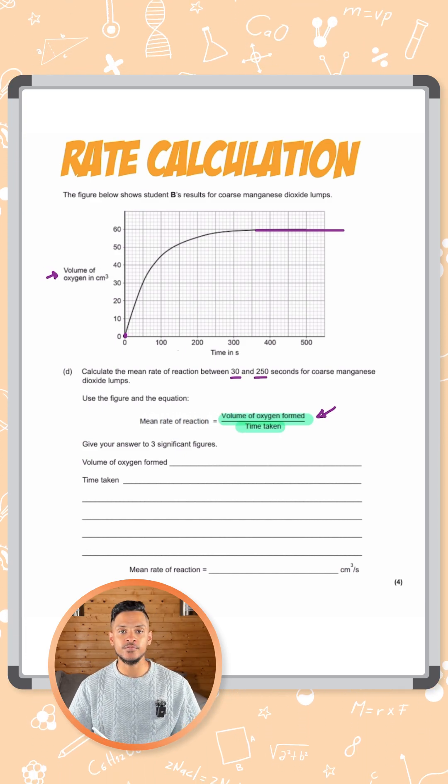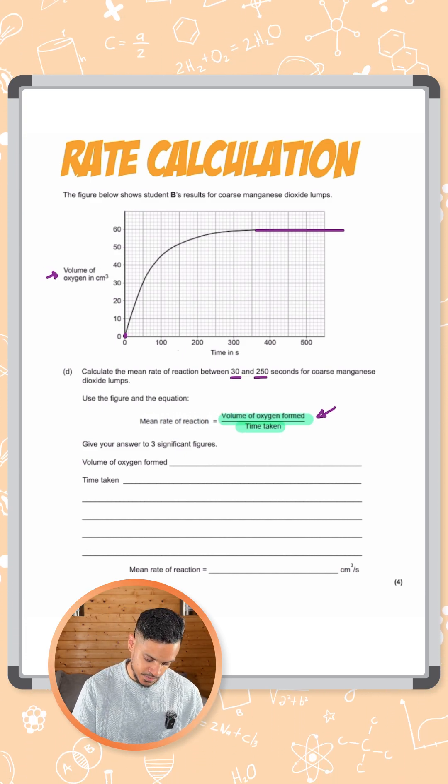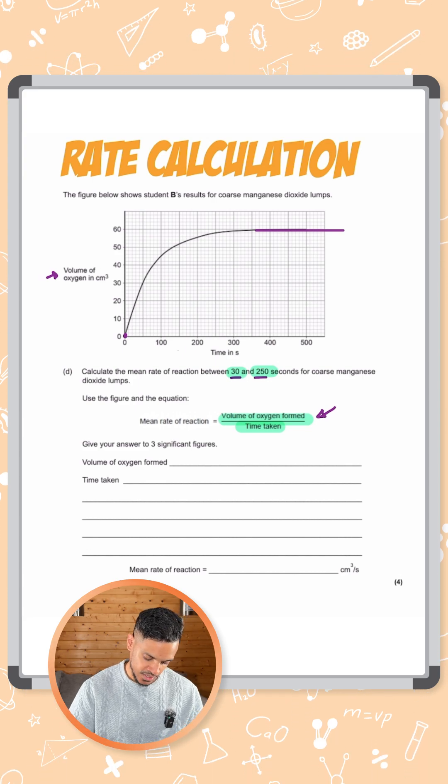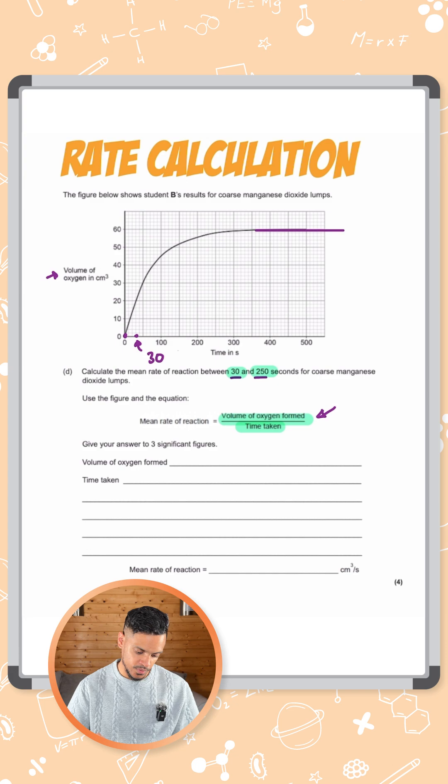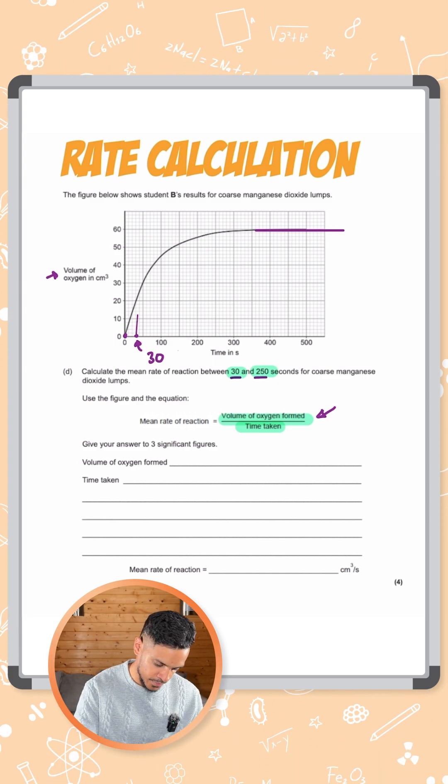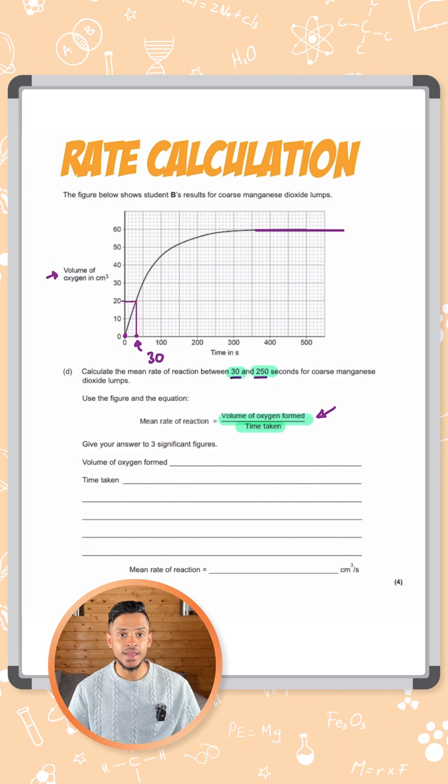So let's work out the volume of oxygen formed. It says between 30 and 250 seconds. So let's go to 30 seconds first of all. So 30 is around here. Let's work out what that volume is. Let's go up and across and the volume there is 20.